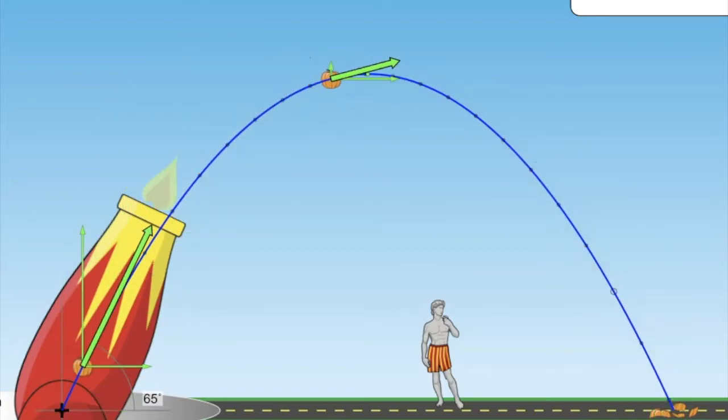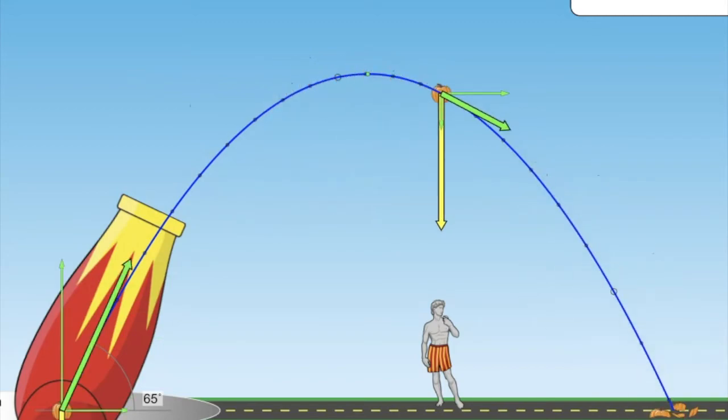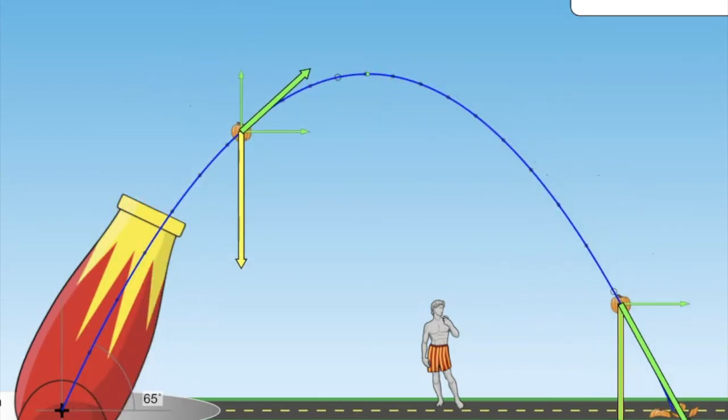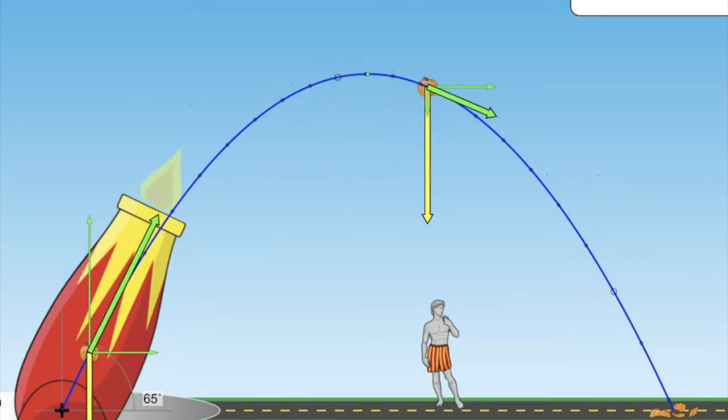Now we can see all of the vectors and their components, which work together to make every object moving under the force of gravity follow the same type of path, a parabola.